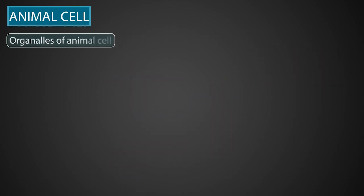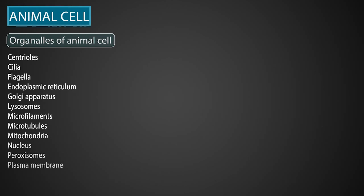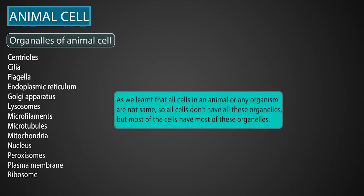Various types of organelles in animal cells are centrioles, cilia, flagella, endoplasmic reticulum, Golgi apparatus, lysosomes, microfilaments, microtubules, mitochondria, nucleus, peroxisomes, plasma membrane, and ribosomes. As we learned, all cells in an animal or any organism are not the same, so all these cells do not have all these organelles, but most of the cells have most of these organelles.